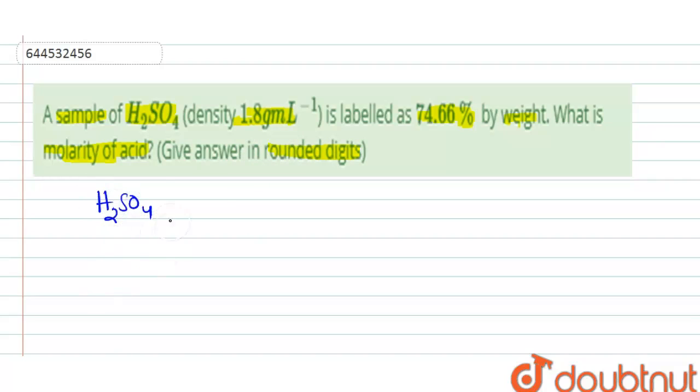We can calculate the molecular weight of sulfuric acid. So molecular weight of sulfuric acid will be equal to 2 into atomic mass of hydrogen plus 1 into atomic mass of sulfur plus 4 into atomic mass of oxygen, which will be equal to 98 gram.